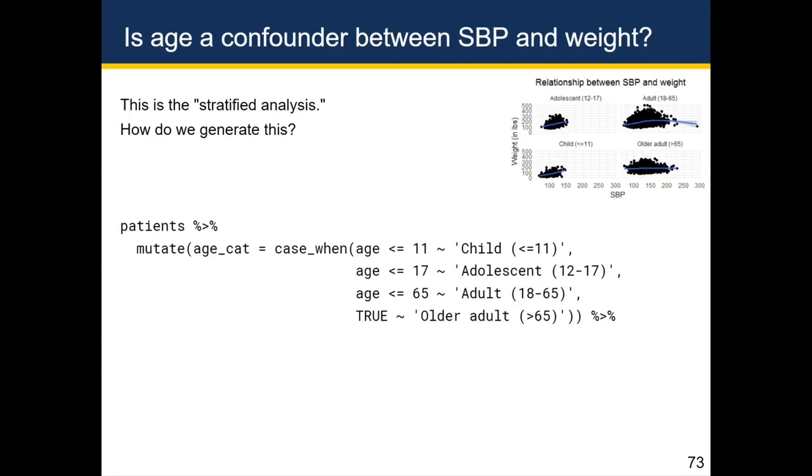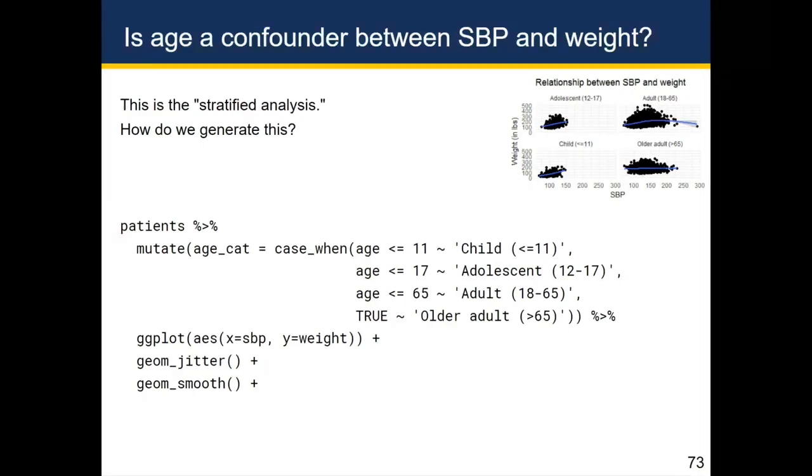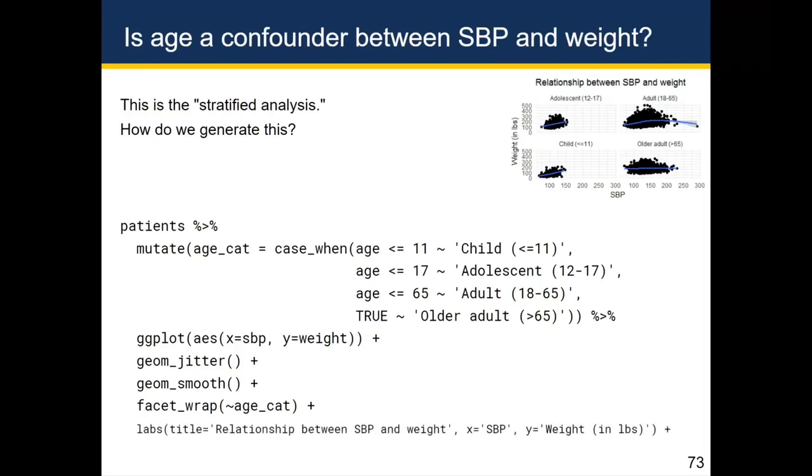Great. So now we've got those categories created, and now it's easy. Now we do the same exact thing we did before, where we create the ggplot, do our mappings, add the geom jitter, add the geom smooth to get the smooth line. And remember that because we specified the mappings inside of ggplot, geom smooth already knows what those mappings are, so you don't have to remap them inside of each of the geometric objects. Then we facet by age category. So because we already created age category, we can facet by it. So we do facet wrap tilde age category. And then we add the labels and the theme, and this gives us the plot on the top right.